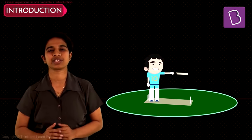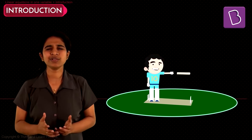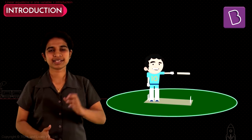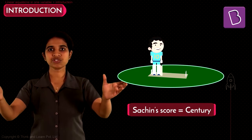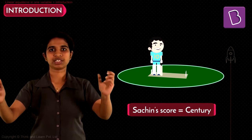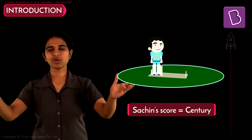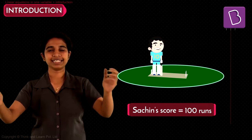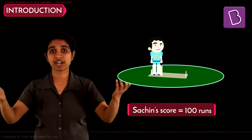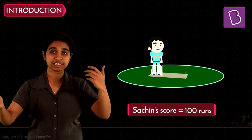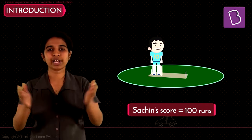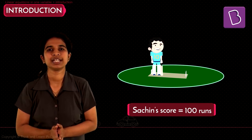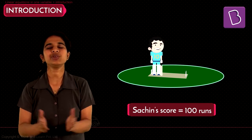If I tell you Sachin scored a century, how do you write that? Sachin's score equals a century, or Sachin's score equals 100 runs. Sachin's score and 100 runs, or Sachin's score and a century, are one and the same thing. That is what an equation does.